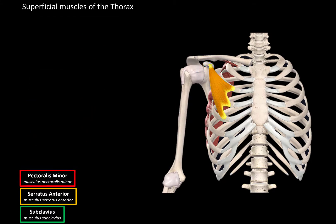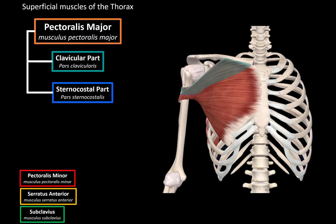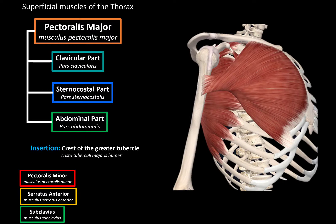Next is the pectoralis major, which is here. Fibers from this muscle are divided into three parts according to where they originate from: the clavicular part, which originates from the clavicle; the sternocostal part, originating from the sternum and the costal cartilage; and the abdominal part, which originates from the abdominal muscles. They all unite and insert at a common place — the crest of the greater tubercle of the humerus, as you see here.